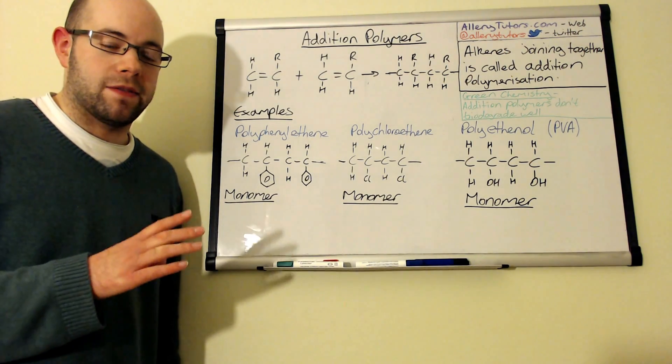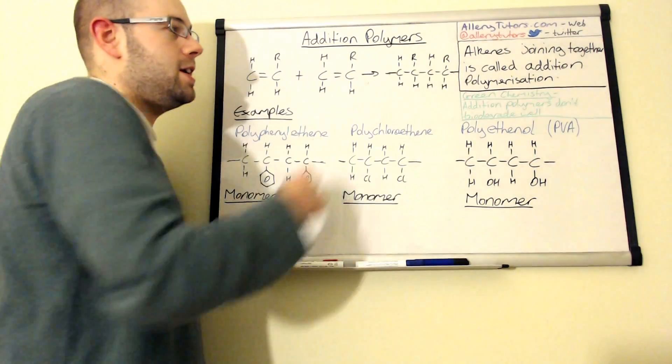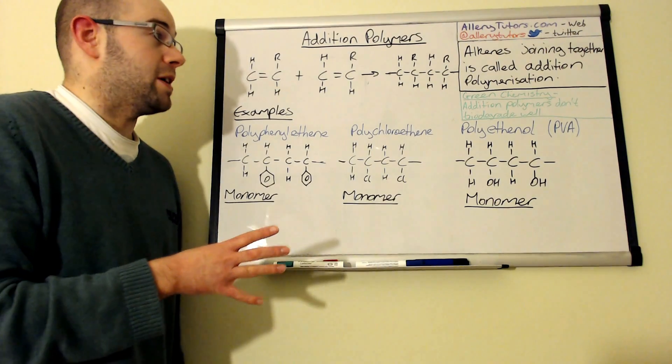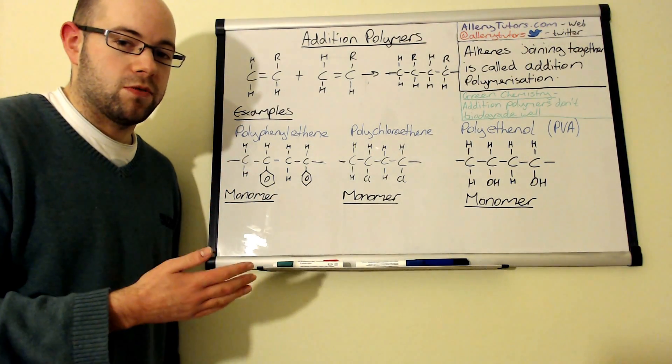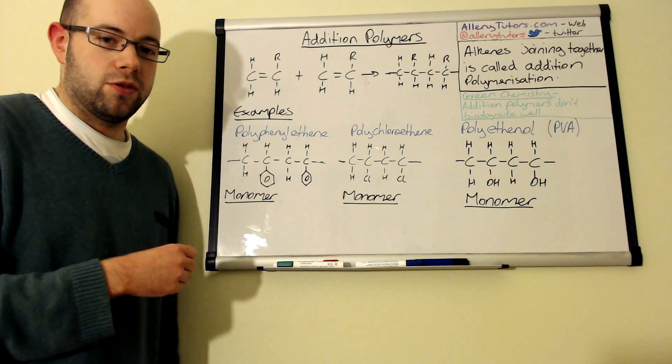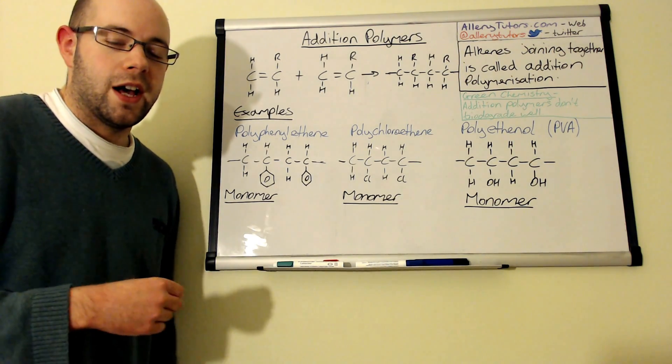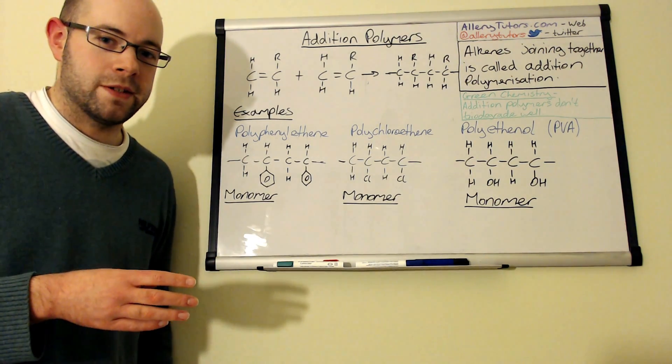This is just one way in which we can make polymers and this is through an addition reaction. Our monomer units that we have to use to make these are actually alkenes. We're going to go through how we can actually make them, what an addition polymerization reaction looks like, and go through some specific examples as well and look at the green chemistry aspect of these molecules too.